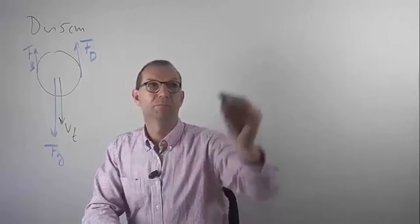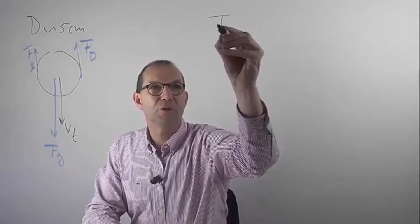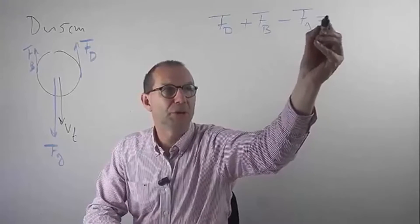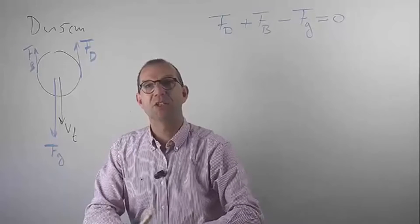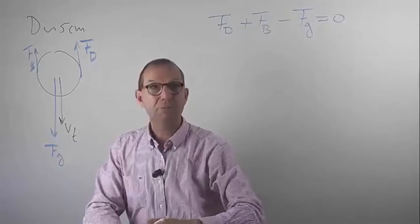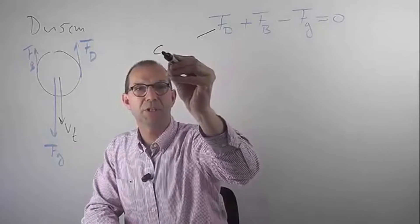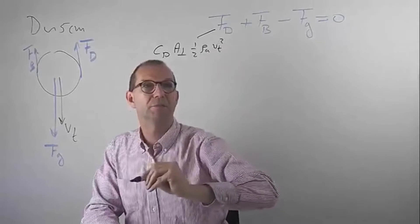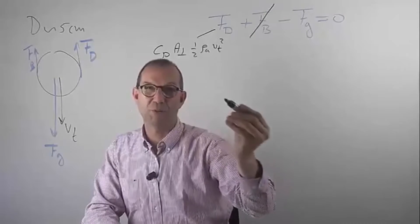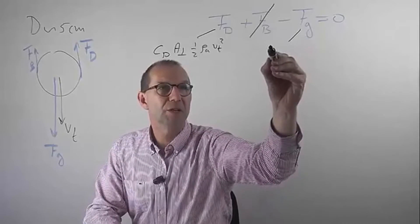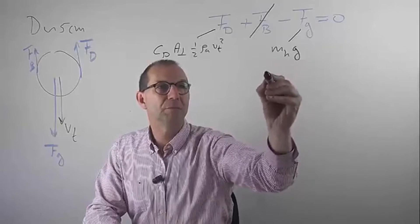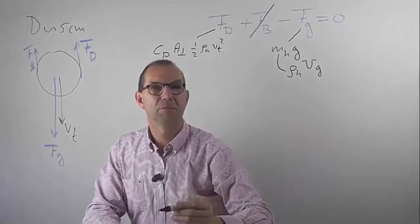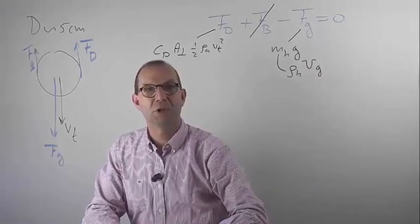I can write down the starting equation. The drag force upwards and the buoyancy upwards are balanced by gravity pointing downwards. We know that drag can be modeled as CD times perpendicular area times one-half rho of the air times V terminal squared. Buoyancy I'm going to ignore because it's pretty small compared to the other forces. Gravity can be written as the density of the hailstone times the volume times G. These two forces should balance, and that should give the terminal velocity.